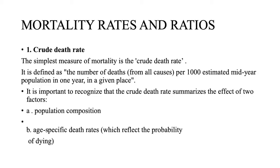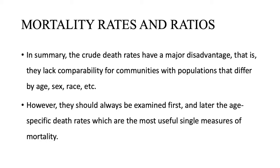So how do we calculate mortality data? The simplest measure is the crude death rate. It is defined as the number of deaths from all causes per 1000 estimated mid-year population in one year in a given place. It summarizes the effect of two factors: the population composition and the age-specific death rates which reflect the probability of dying. In summary, crude death rates have a major disadvantage — they lack comparability for communities with populations that differ by age, sex, race, etc.